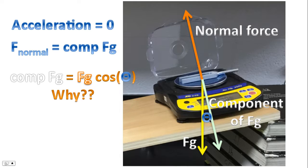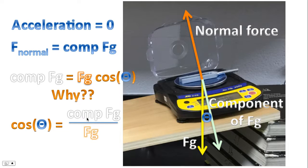Now, the component of the force of gravity is equal to the force of gravity times cosine of the angle. Why is that? Well, recall some trigonometry. Cosine of any angle is adjacent over hypotenuse. The adjacent side is the component of the force of gravity. This vector here is the adjacent. The hypotenuse is this vector here. That's the hypotenuse to the triangle. This is the adjacent side.